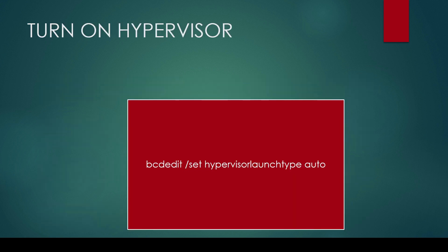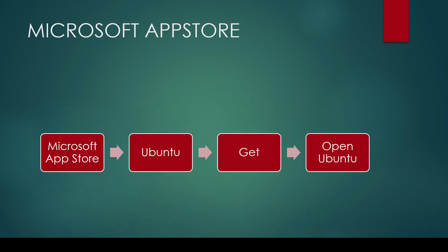Next, open the Command Prompt as administrator and type: `bcdedit /set hypervisorlaunchtype auto`. Once you've done this, restart your system.